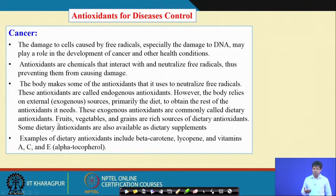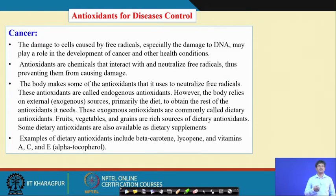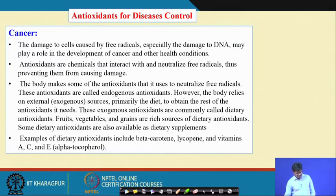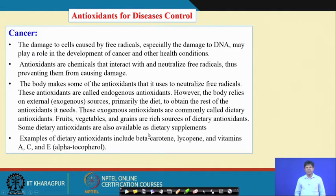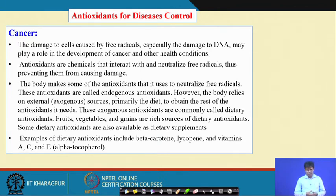The body relies on external or exogenous sources, primarily the diet, to obtain the rest of the antioxidants it needs. These are commonly called dietary antioxidants. The body has its own defense, including secretion of glutathione peroxidase, but these are not enough to fight free radicals, so you need external supply. Daily intake of fruits and vegetables can supply natural antioxidants. Fruits, vegetables, and grains are resources of dietary antioxidants; some are also available as dietary supplements.